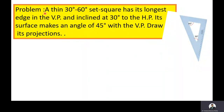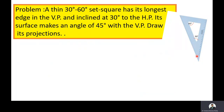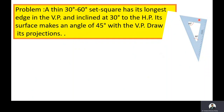The given problem is: a thin 30°-60° set square has its longest edge in the VP and inclined at 30 degrees to the HP. Its surface makes an angle of 45 degrees with the VP. Draw its projections. The set square's longest edge has 30 degrees on one side and 60 degrees on the other. Now we will extract the data from this problem.